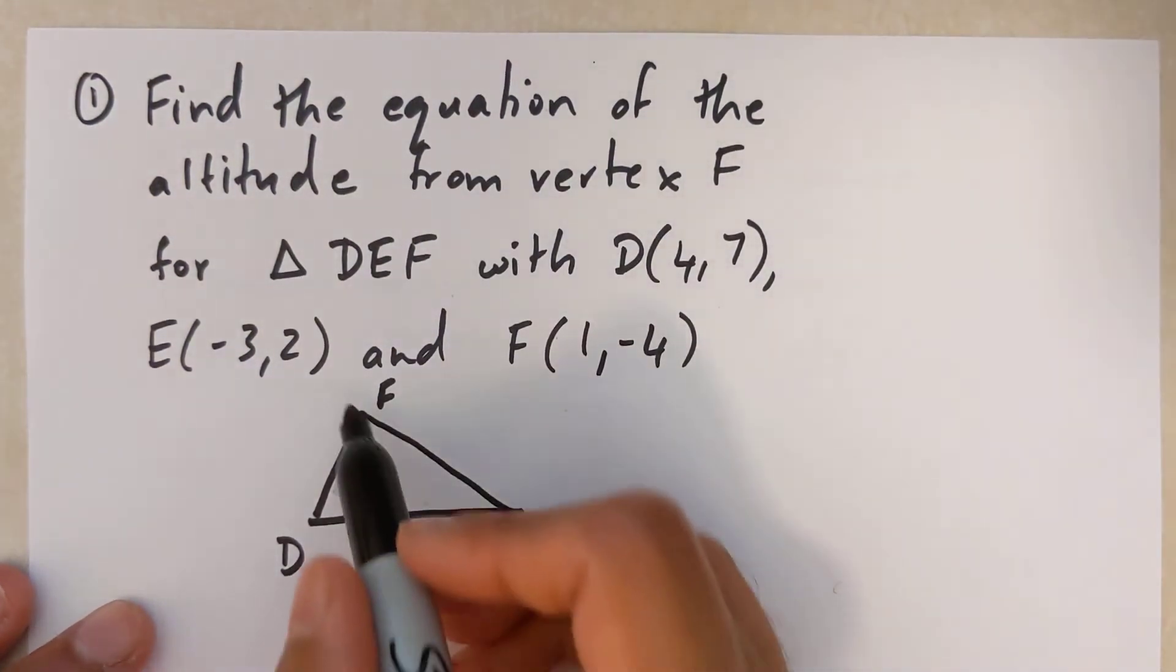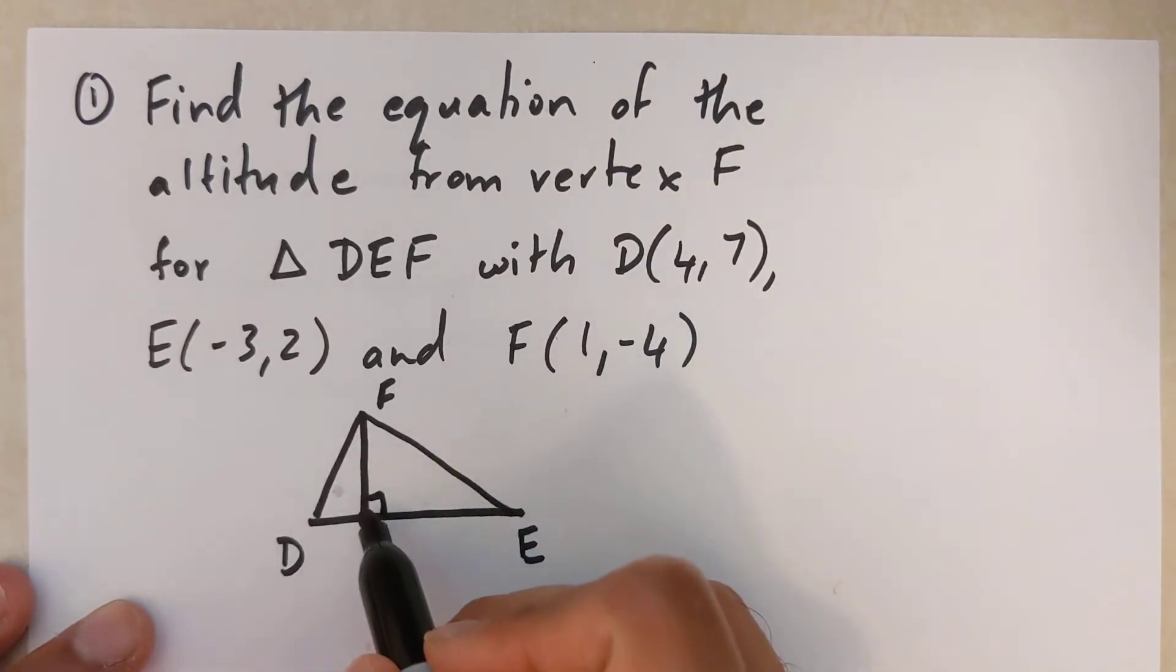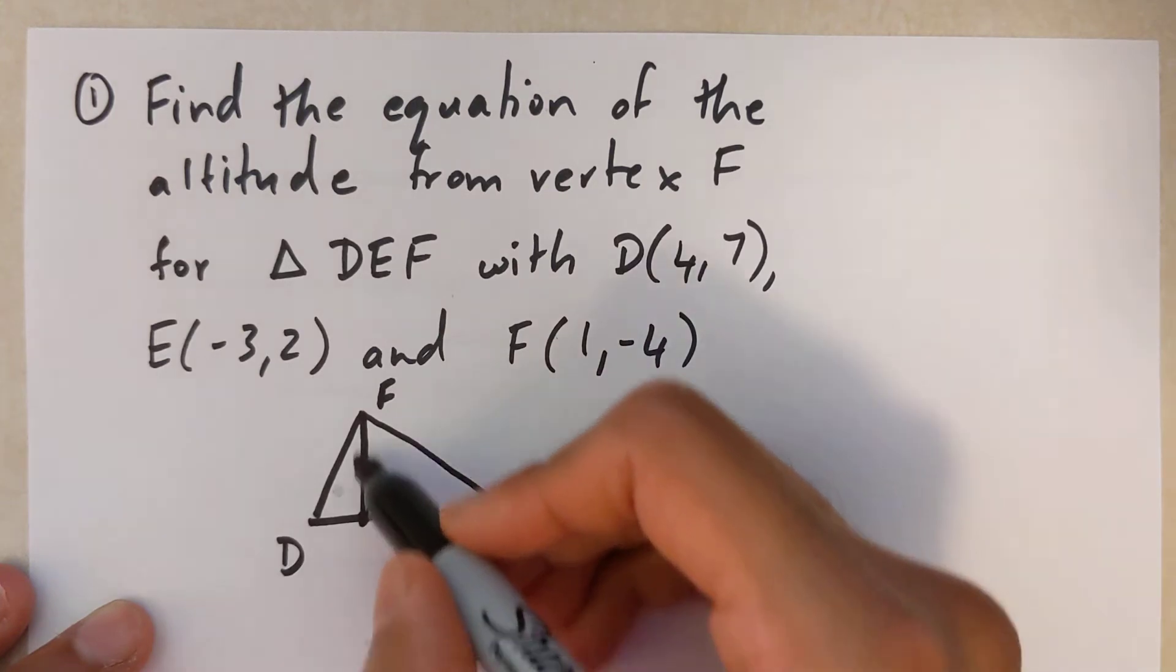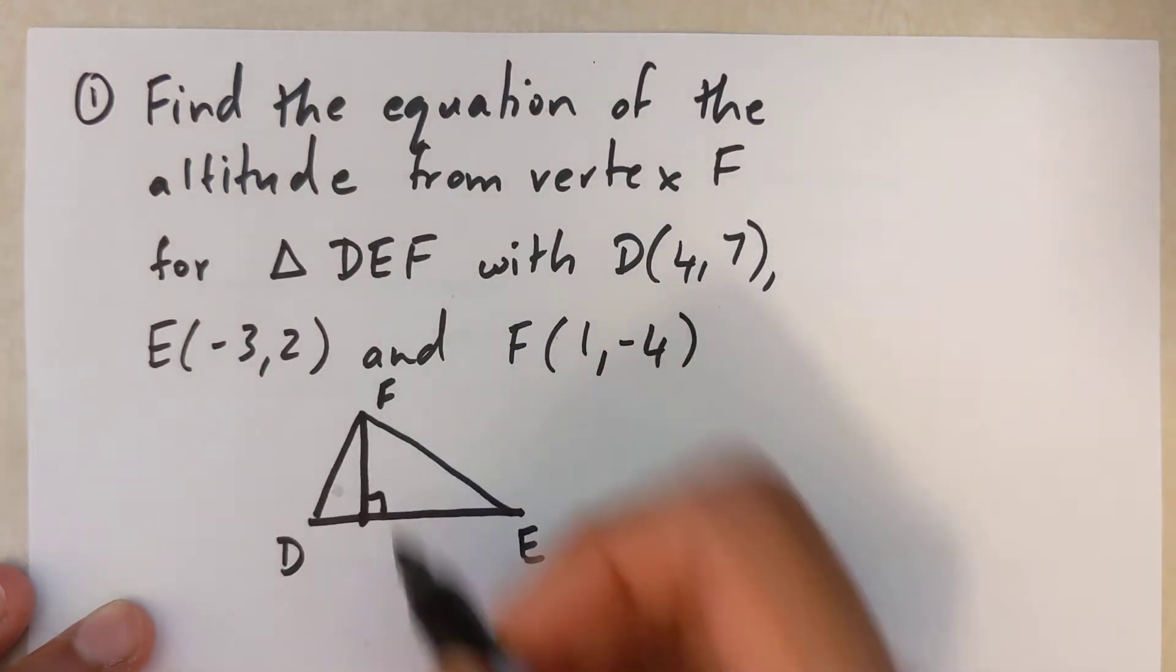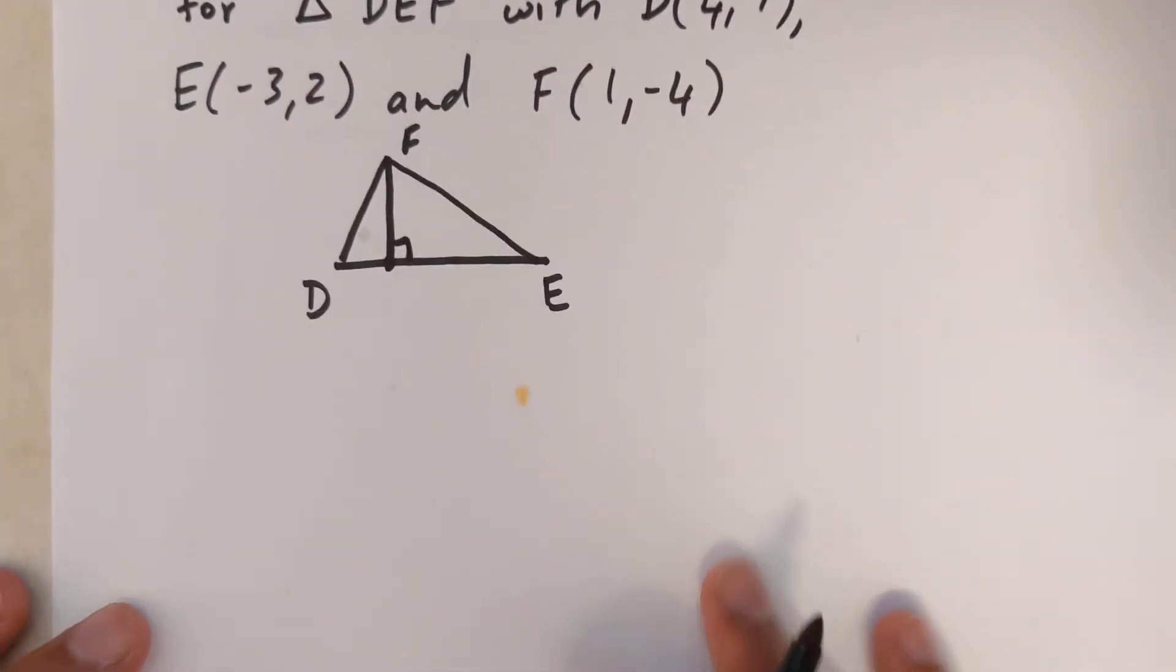Now if I want to find the equation of this line, I'm going to first find the slope of this line and then I'm going to do the negative reciprocal. It's going to give me the slope of this line right here.